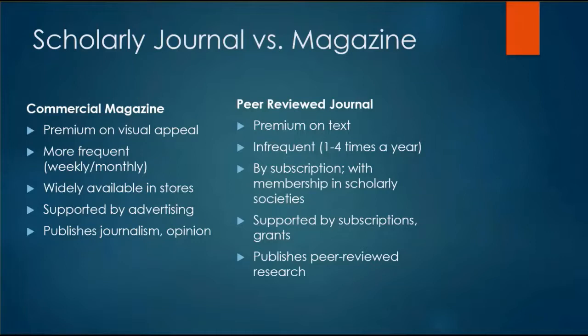Because peer-reviewed journals take so long to go through the peer-review process, the journals only come out one to four times a year. If there is a current event going on right now that you see reported in a commercial magazine, there may not be articles about that event for another year or more in a peer-reviewed journal.